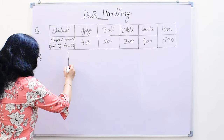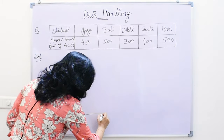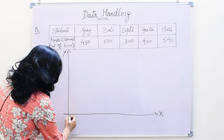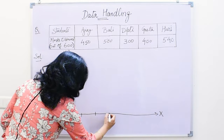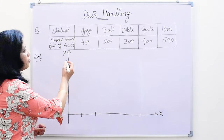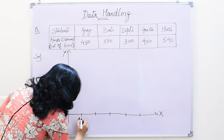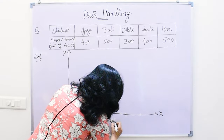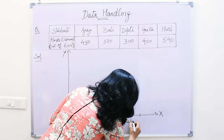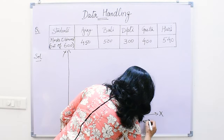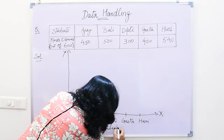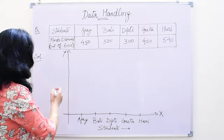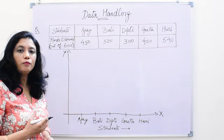First, we will make the two axes. This is the x-axis and this is the y-axis. We will take equal divisions on the x-axis and here we will write the names of the students. So on the horizontal line, which is the x-axis, we have written the names of the students. I am making a rough figure — you have to make all the lines with your ruler.